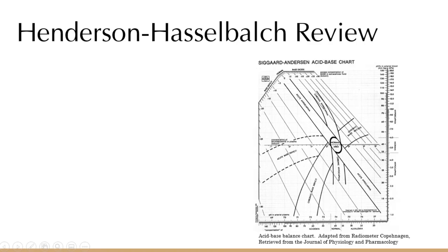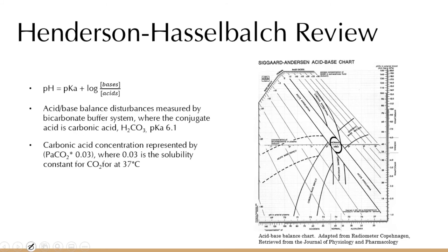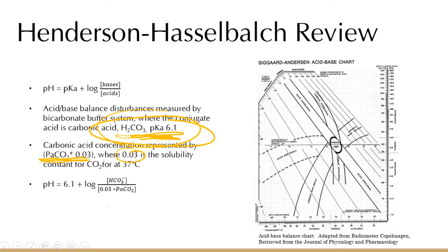Acid-base balance — not going to go over too much here, stuff you already know from gen chem and med school. If you ever wanted to calculate your pH, bicarbonate is the main buffer system we use. The pKa is 6.1 at physiological body temperature. We don't actually measure carbonic acid in the body, but we get it indirectly by multiplying by 0.03, the solubility constant for CO2. You can take your bicarb, multiply your PaCO2 by 0.03, and calculate your pH using the Henderson-Hasselbalch equation.